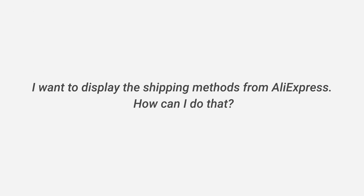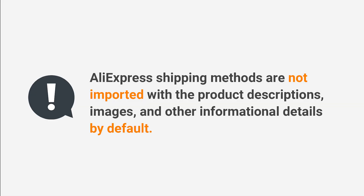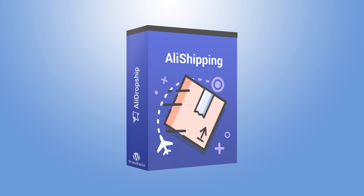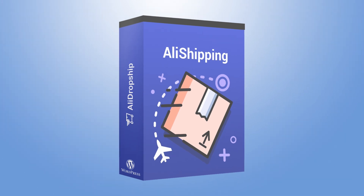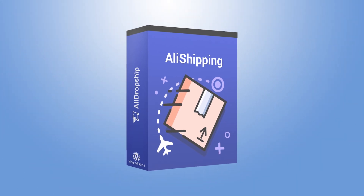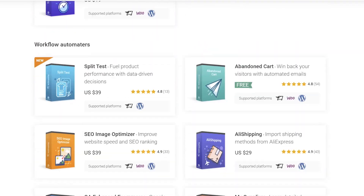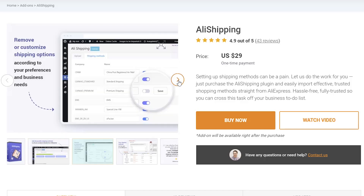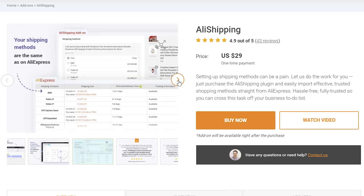Frequently asked questions. I want to display the shipping methods from AliExpress — how can I do that? AliExpress shipping methods are not imported with product descriptions, images, and other details by default. You can create them manually with the same conditions as AliExpress for each product or all products. If you would like to import and customize all possible AliExpress shipping methods, consider purchasing the Ali Shipping add-on — it will do everything for you, saving time and attracting more customers by offering a wide range of delivery options. Find the link in the description.